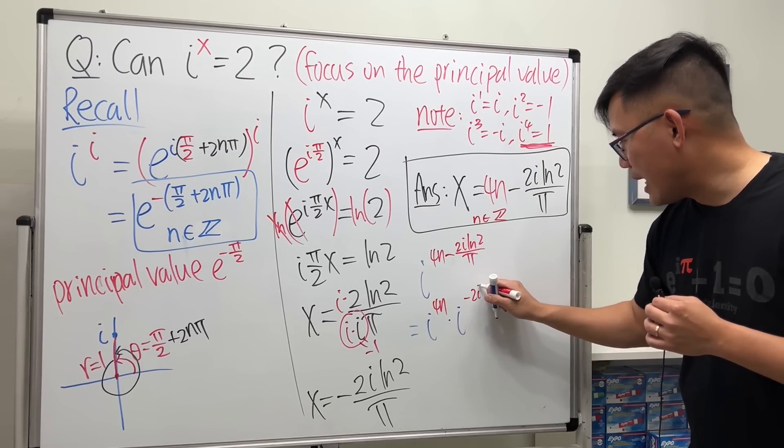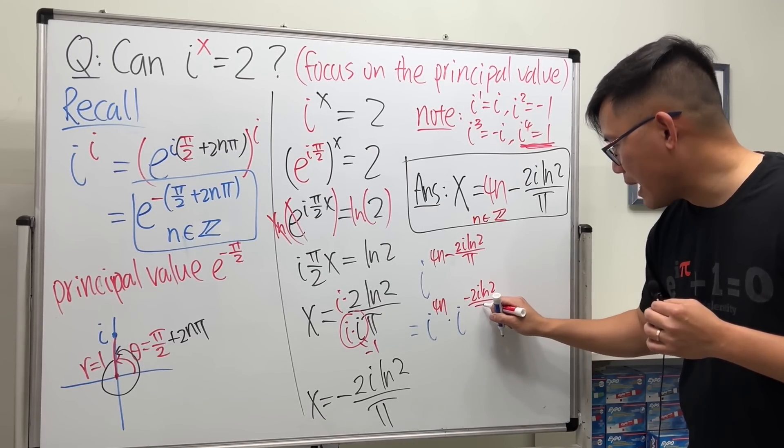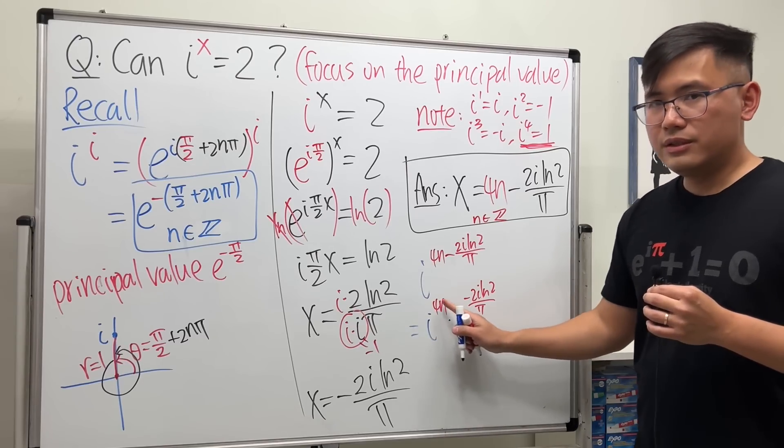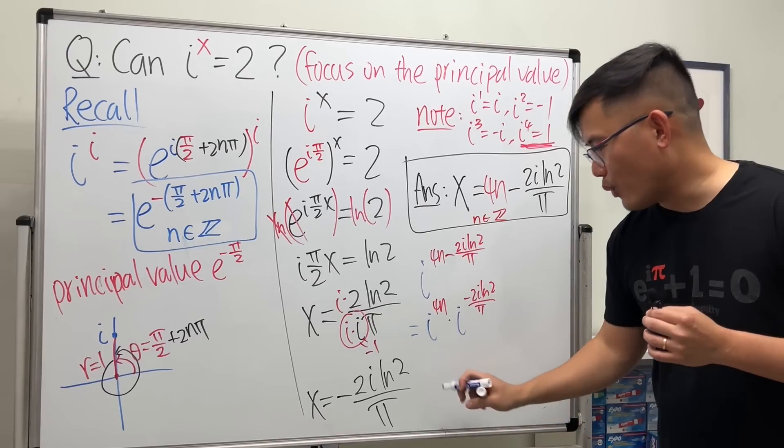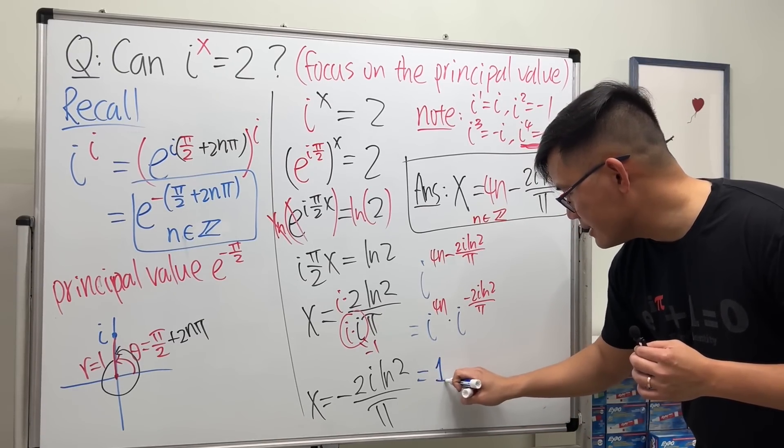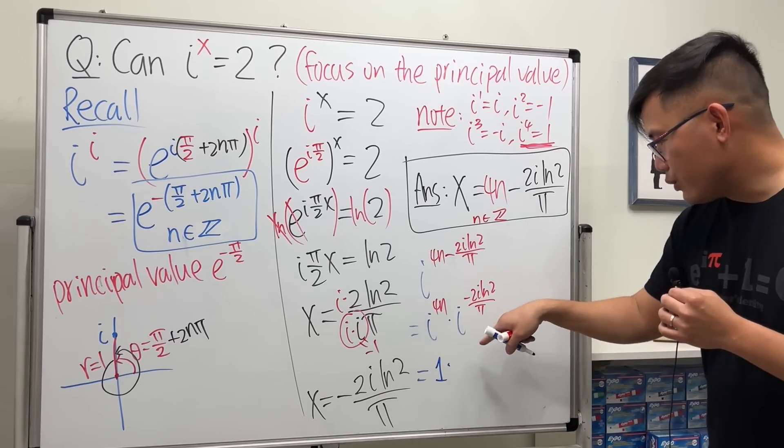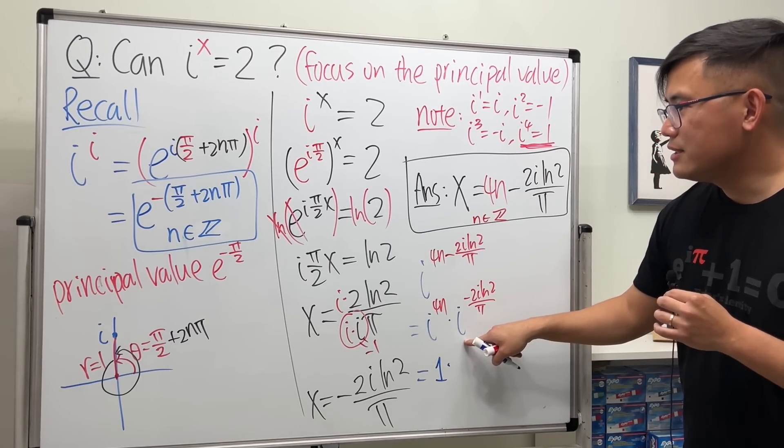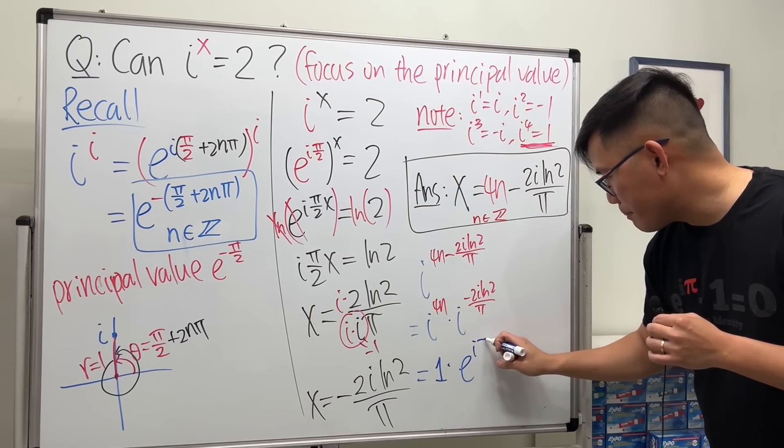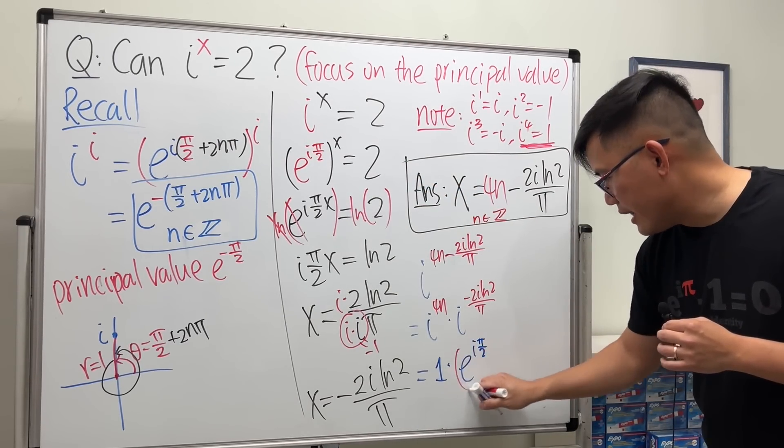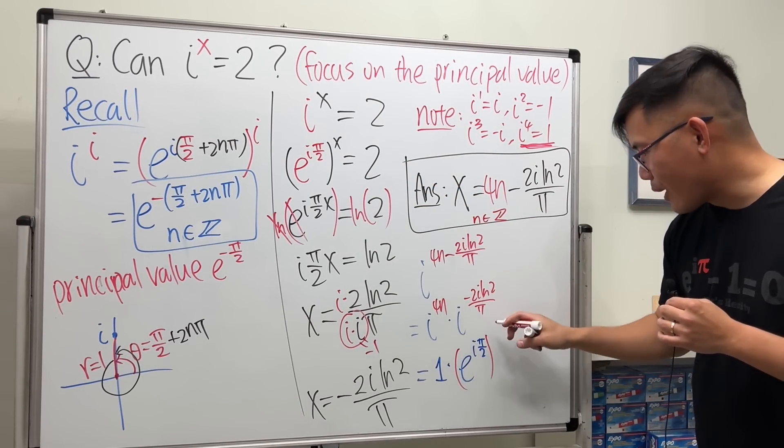So what we do first is we can write this as i to the 4n and then times i to the negative 2i ln 2 over π. This is always equal to one—i to the multiple of four is always equal to one—so we just have a nice number one. And then to work this out, this i, let's just write it as e to the iπ over 2 again. So e to the iπ over 2, and then we will raise that to this power: negative 2i ln 2 over π.